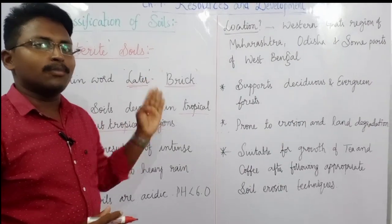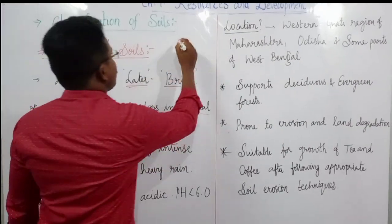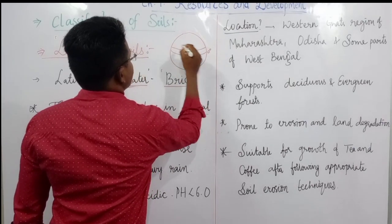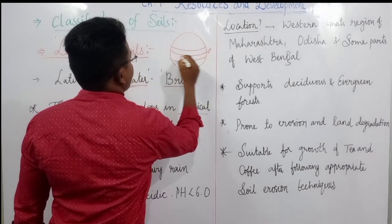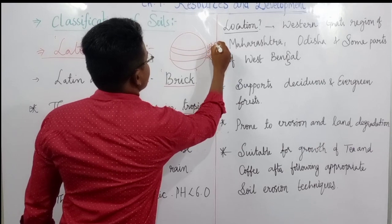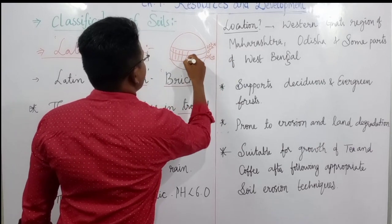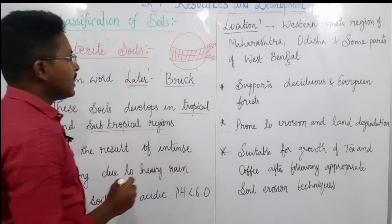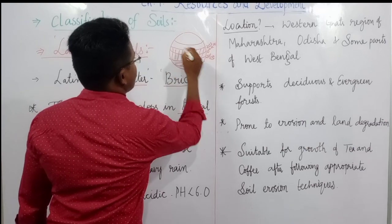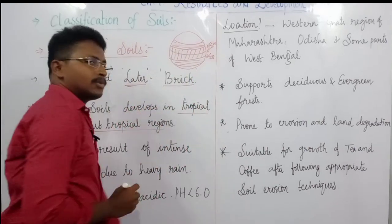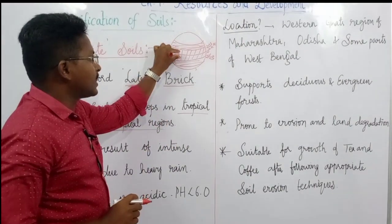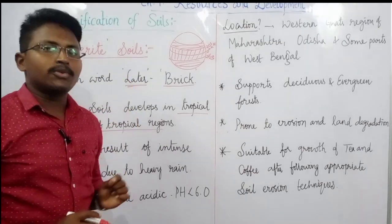These soils develop in tropical as well as subtropical regions. If you take a globe, between the Tropic of Cancer and Tropic of Capricorn is the tropical region. Above that, up to the Arctic Circle and Antarctic Circle, is the subtropical region. Laterite soils are found in both these tropical and subtropical regions.